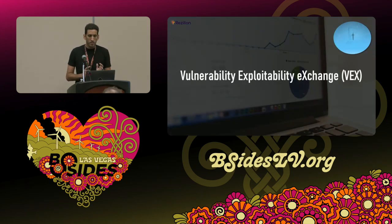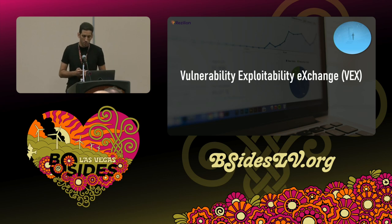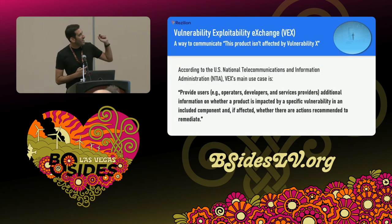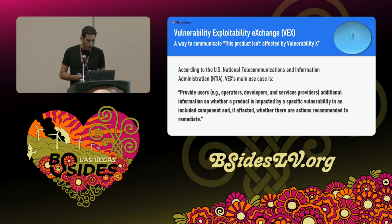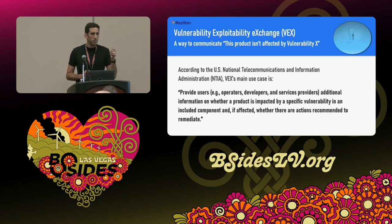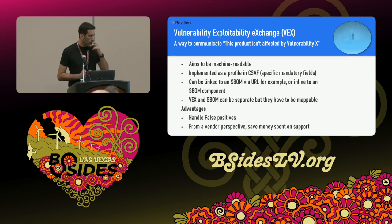Another important piece of the puzzle is VEX — the Vulnerability Exploitability Exchange. Apologies for the name, but we'll live with it. VEX is a way to communicate whether a piece of software is affected by a specific vulnerability. The purpose: 'to provide users additional information on whether a product is impacted by a specific vulnerability in an included component, and if affected, whether there are actions recommended to remediate.'